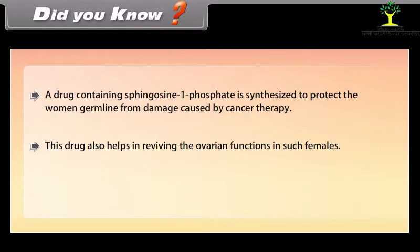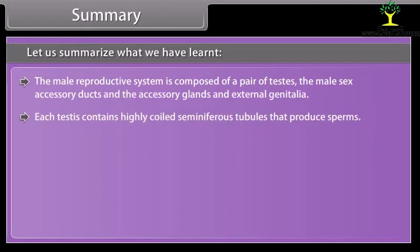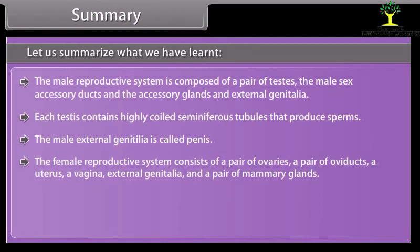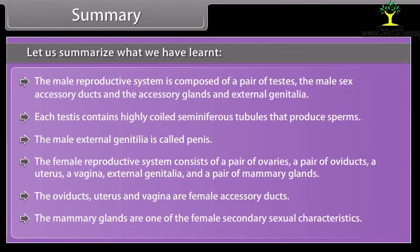The female reproductive system is composed of a pair of ovaries, a pair of oviducts, a uterus, a vagina, external genitalia, and a pair of mammary glands. The male reproductive system includes the testes — each containing highly coiled seminiferous tubules that produce sperm — male sex accessory ducts, accessory glands, and external genitalia (penis). The oviducts, uterus, and vagina are female accessory ducts, and the mammary glands are a female secondary sexual characteristic.